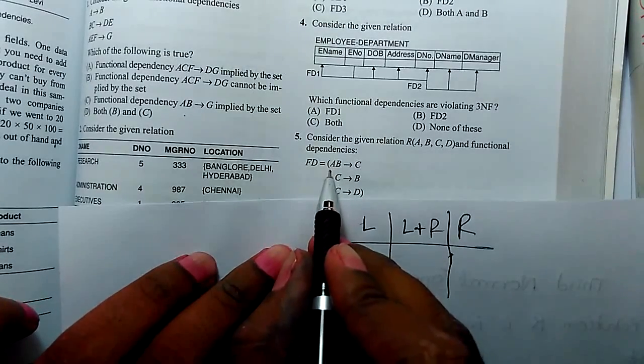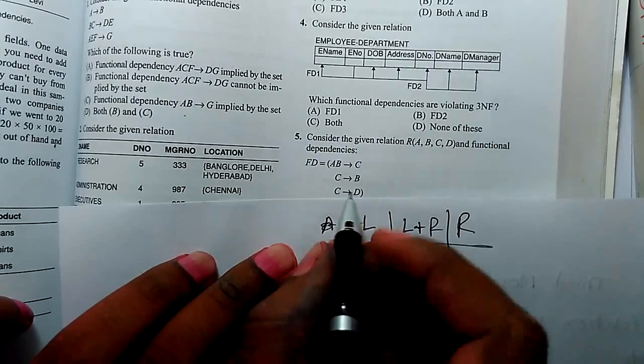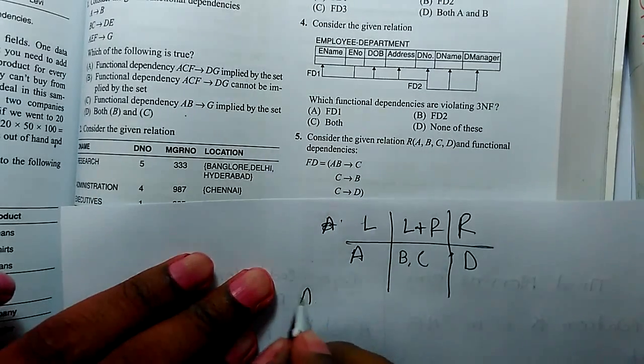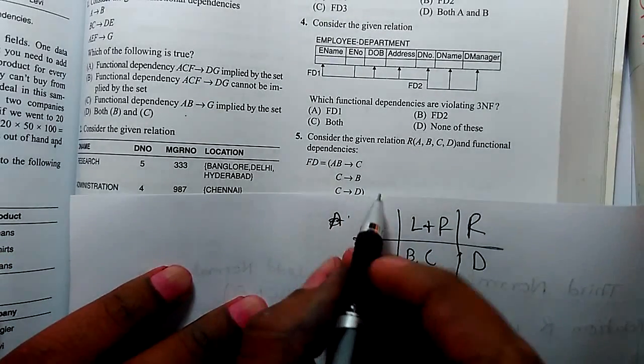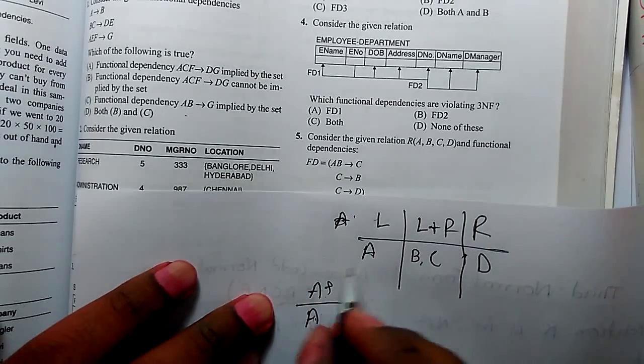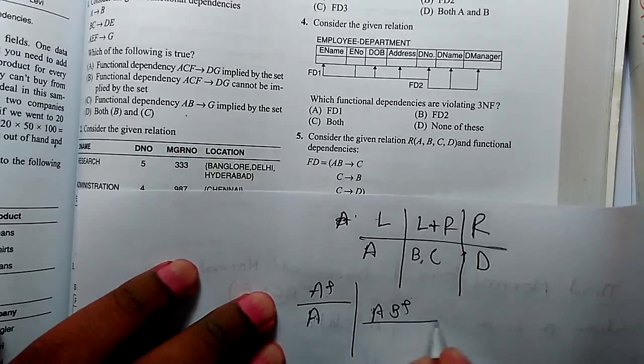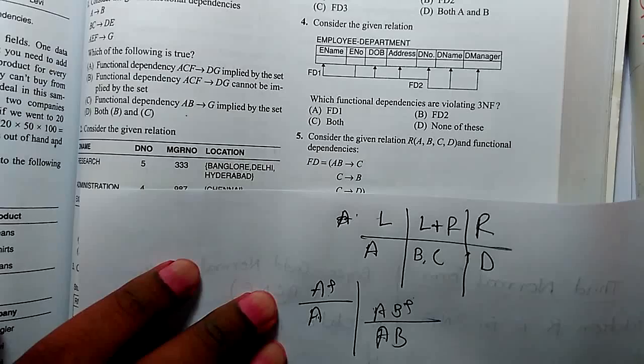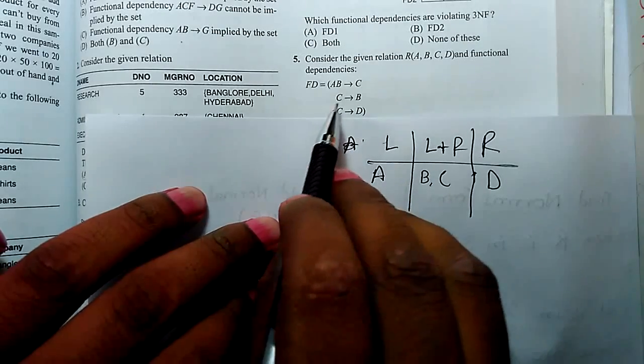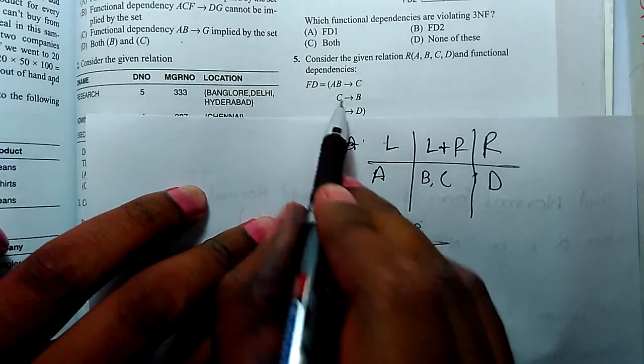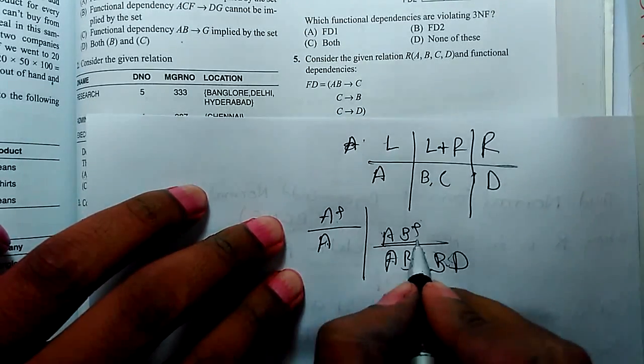So which attribute in left side only? A. Left and right both the side B and C. Only right D. So A closure can determine key through reflexivity. A determines A. Now A cannot determine any other thing else. Now we are going to combine A with B. AB closure through the reflexivity determines AB. And AB determines C. C determines B and C determines D. It means AB is a key.